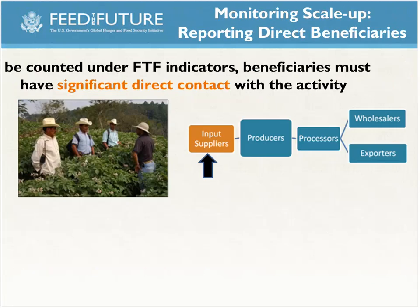All of these indicators are geared toward measuring impacts on direct beneficiaries. Direct beneficiaries are those that receive significant direct contact with an activity. This does include cascade or peer-to-peer training and training of trainers. If the project has a specified methodology involving cascade training, everybody in that cascade is considered a direct beneficiary. So if you're training trainers who will then train farmers, those farmers are direct or targeted beneficiaries of your training activity, and you would want to include them.